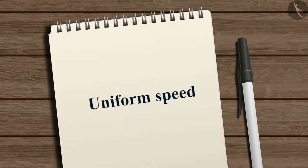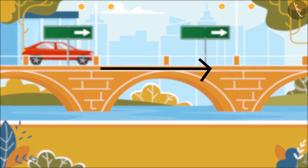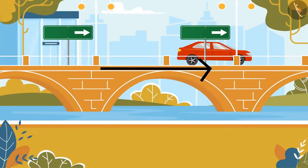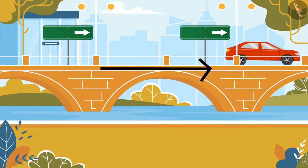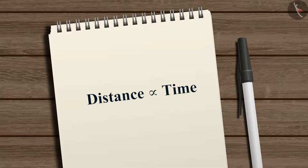First we will consider the case of uniform speed. If an object is moving with a uniform speed, we know that it covers equal distances in equal time intervals. We can say that the distance is directly proportional to the time taken.